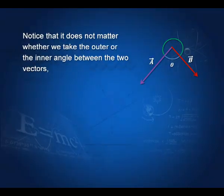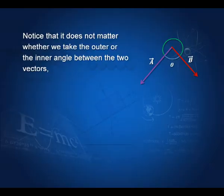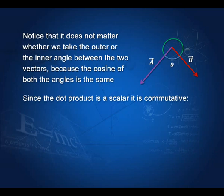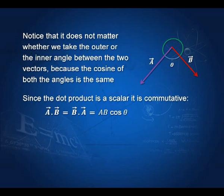Notice that it does not matter whether we take the inner or the outer angle between the two vectors. The inner angle is theta and the outer angle is 2π minus theta, and cos theta equals cos(2π − theta). Since the dot product is a scalar, it is commutative: vector a · vector b equals vector b · vector a, and both are equal to ab cos theta. The order does not matter; a·b or b·a, the product is always the same ab cos theta.